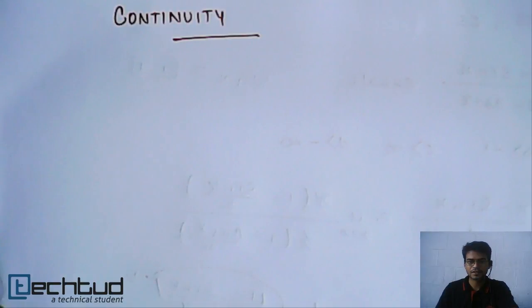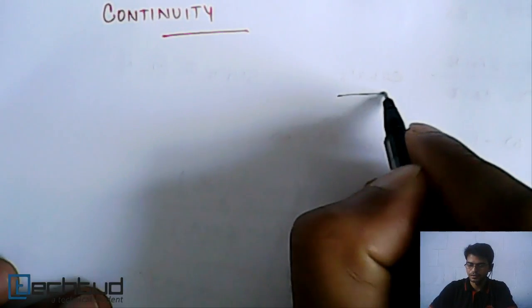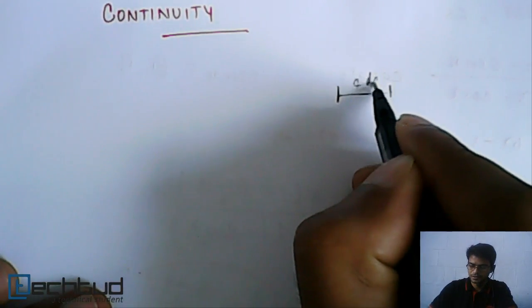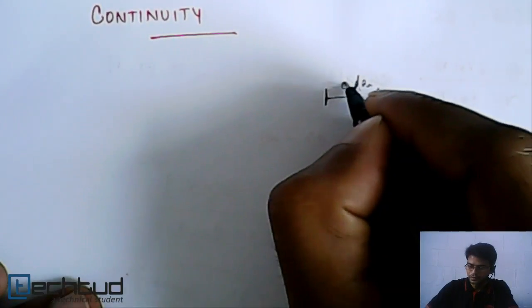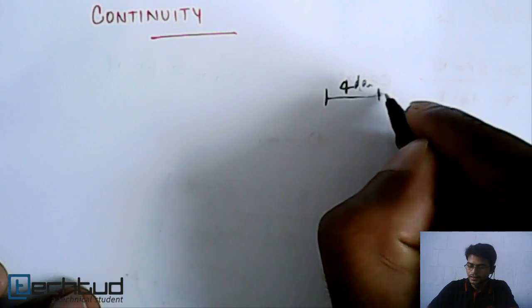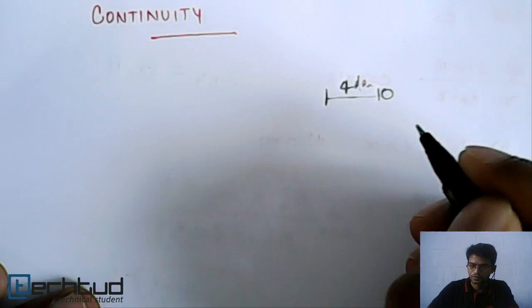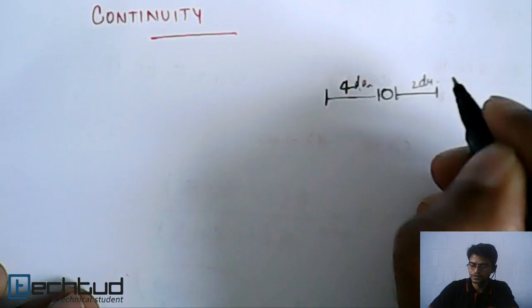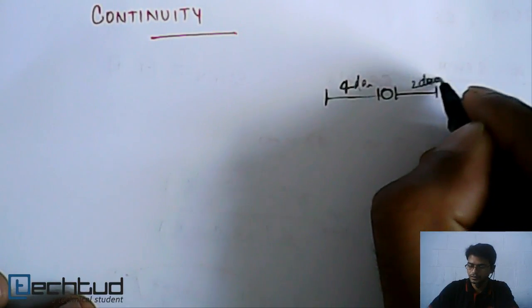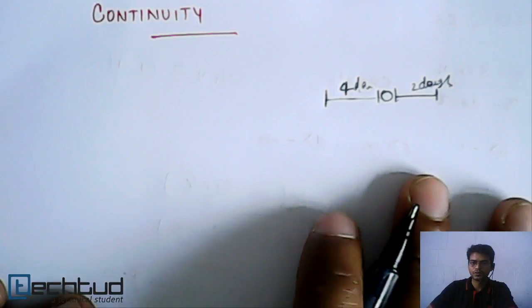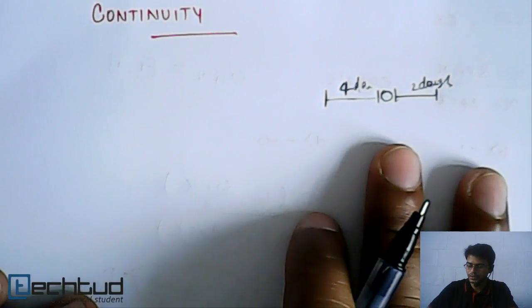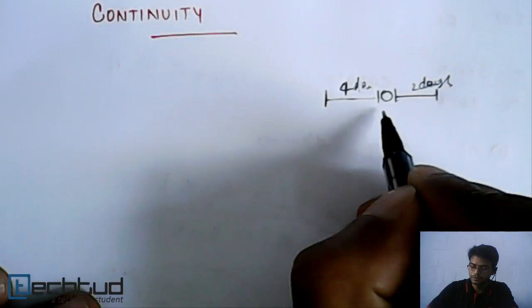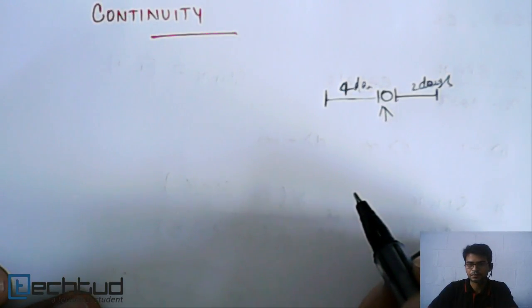As the name suggests — continuity — imagine you are preparing for an exam and you are studying. Let's say you study for four days and you don't study for one day, and then again you start and study for two days. This is how your week looks. It means you are not continuous towards your study; you take a break of one day in between.